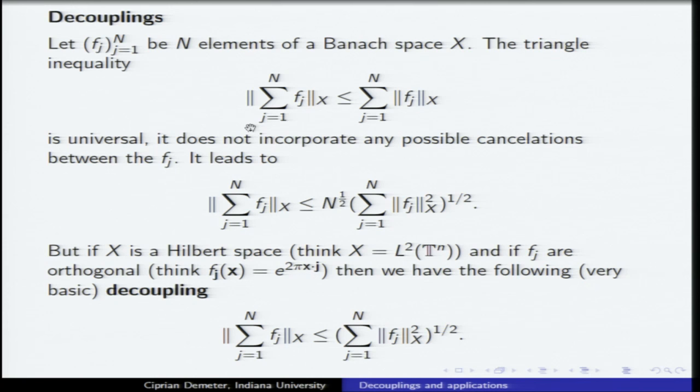Let's think about the Banach space example. You have the triangle inequality. If you don't have any further knowledge on the elements of the Banach space, all you can say is that if you combine the triangle inequality with Cauchy-Schwarz, and you want to write the right-hand side not as a little L1 norm but as a little L2 norm, then there is a factor of n to the power 1.5. That's the best you can say in general. So this is not very interesting — you can't do too much with this inequality.